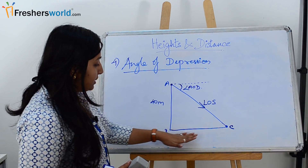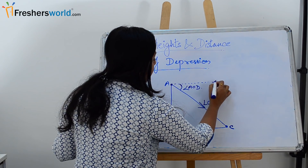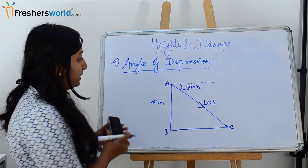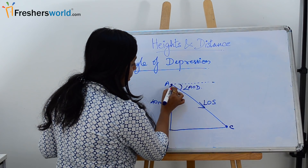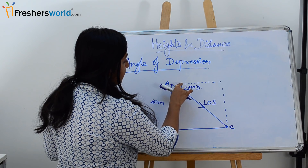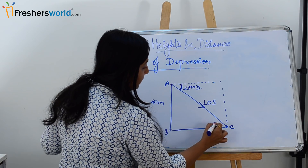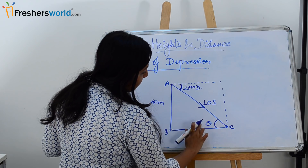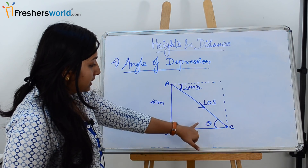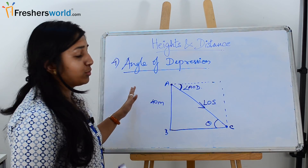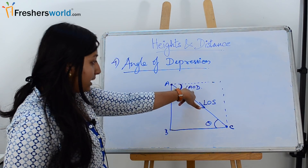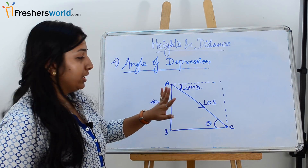If we join the two lines to form a triangle, we can see that the two horizontal lines are parallel to each other. Using the concept of parallel lines, if angle AOD is theta, then the angle of depression and angle theta will always be equal. You don't need to go deep into the parallel lines concept — just remember that the angle of depression and the corresponding angle theta are always equal in all cases.